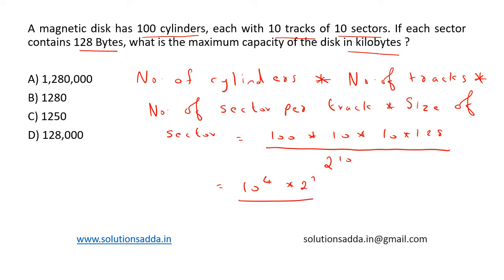We have 10 to the power 4 divided by 2 to the power 3, which equals 1250 kilobytes. So option C, 1250, is the correct answer.